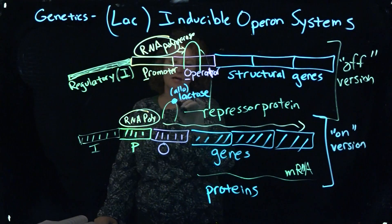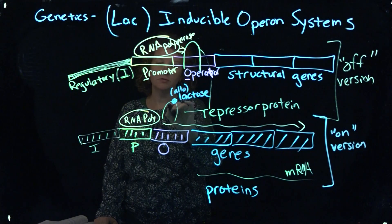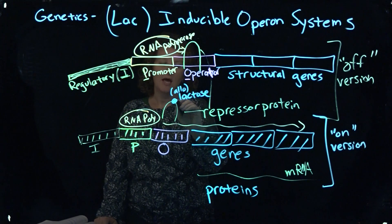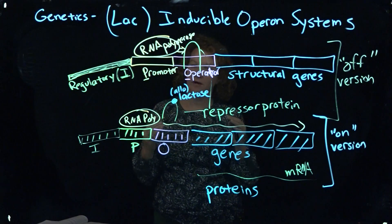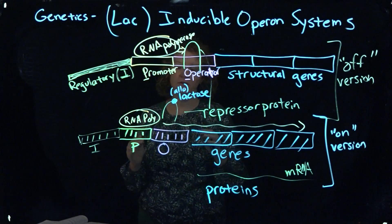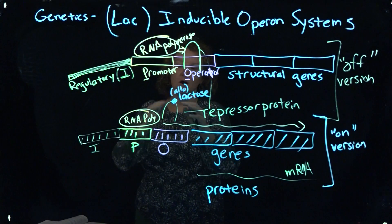And the way it does that is that lactose binds to that repressor protein. This is a protein here. And it will cause it to bend or change in some way, change the shape. We know proteins work very specifically based on the shape that they're folded into that will come off of the operator.